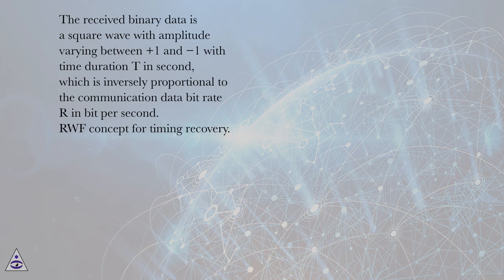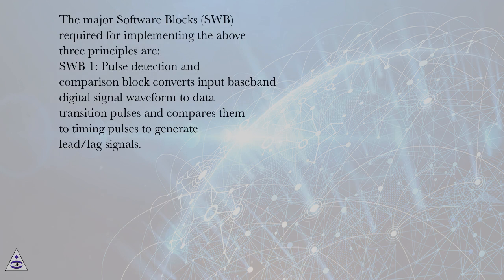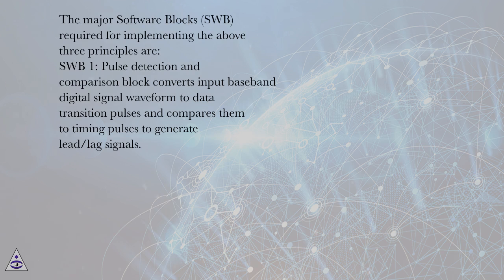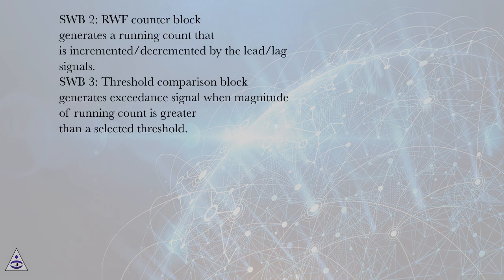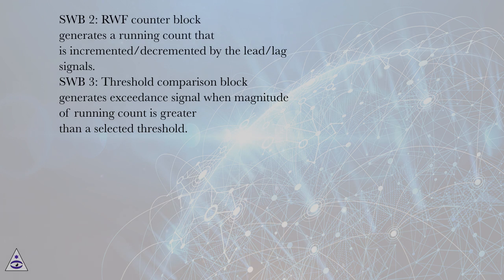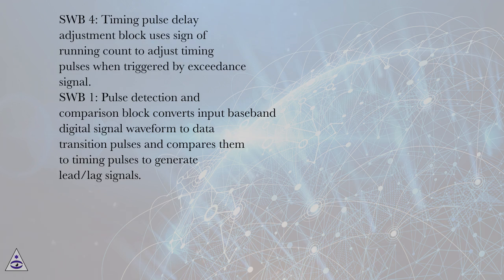RWF Concept for Timing Recovery. The major software blocks (SWB) required for implementing the above three principles are: SWB1 — Pulse Detection and Comparison block, which converts input baseband digital signal waveform to data transition pulses and compares them to timing pulses to generate lead/lag signals. SWB2 — RWF Counter block, which generates a running count incremented/decremented by the lead/lag signals. SWB3 — Threshold Comparison block, which generates an exceedance signal when the magnitude of the running count exceeds a selected threshold. SWB4 — Timing Pulse Delay Adjustment block, which uses the sign of the running count to adjust timing pulses when triggered by the exceedance signal.